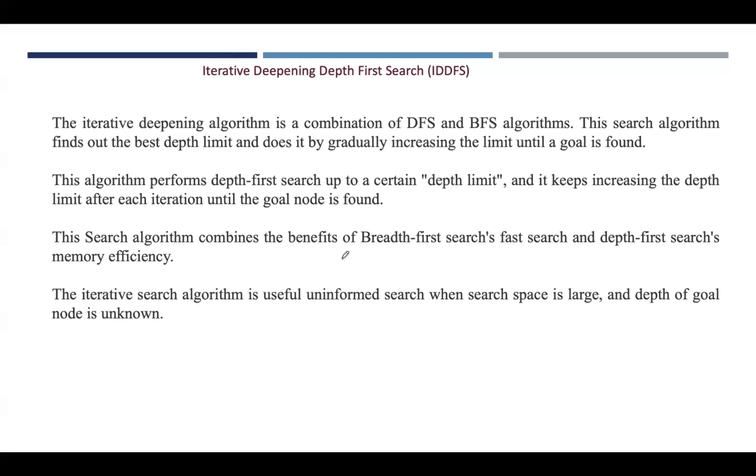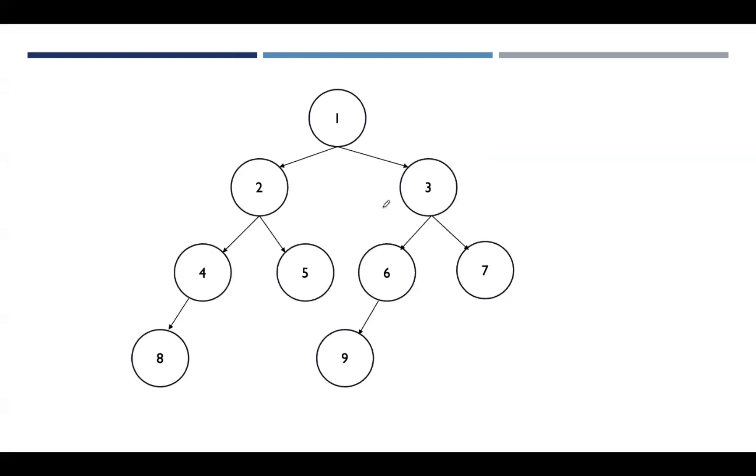The disadvantage is visiting certain nodes more than once. If the algorithm visits more than once, then obviously it might slow down the search process. However, the benefits of completeness and optimality frequently exceed this disadvantage.